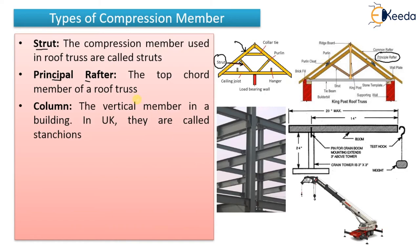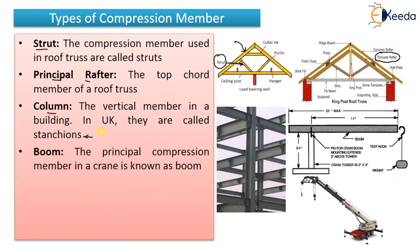Then column. The vertical members in a building are known as columns — any vertical member in a building is known as a column. But in the UK, they are known as stanchions. Stanchions also refer to built-up columns or built-up sections. So built-up columns or columns in the UK are known as stanchions.